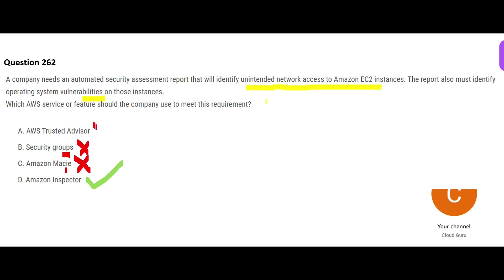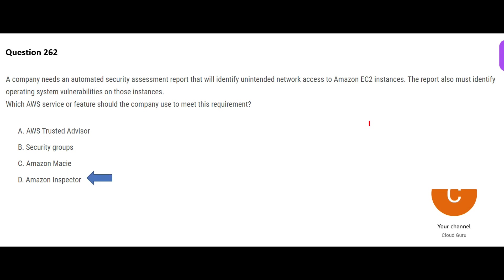Option D is Trusted Advisor. It is a security-type solution but it is multi-purpose — it gives you guidance on how to save costs, make your system highly performant, and highly secured. It is like a consultant that provides thought leadership across many dimensions. But for identifying unintended network access and system vulnerabilities, Inspector is my final answer.